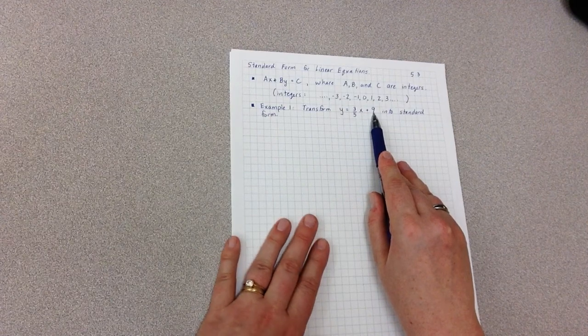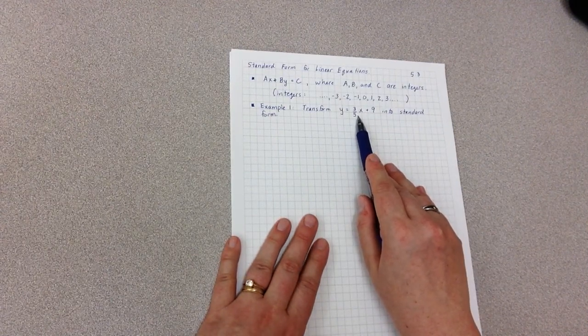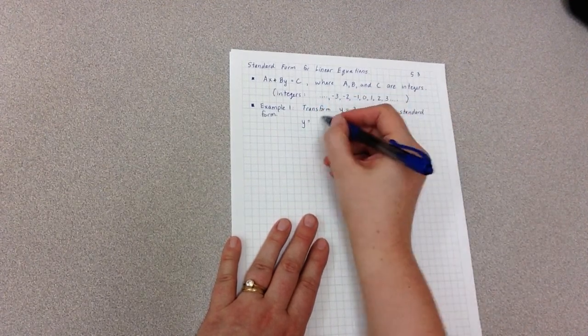So when looking at this equation, the plain number here is 9. The first thing I'm going to want to do is move the negative 3/5 x over to the other side. So I start with my equation.